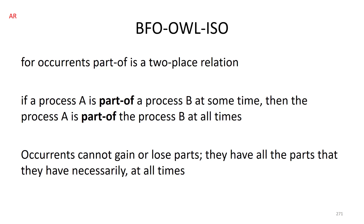Suppose that my dog might lose its tail. My dog has part tail at T, but then it gets into a horrible accident and loses its tail, so it's no longer true that my dog has part tail at T1. For continuants, part-of relations have to be time-indexed. A part-of relation between occurrents is always true at all times, but a part-of relation between continuants is true only at certain times.